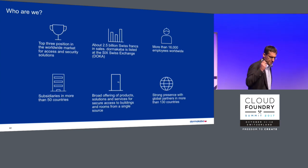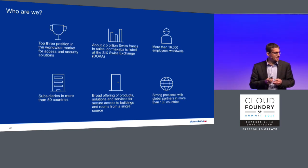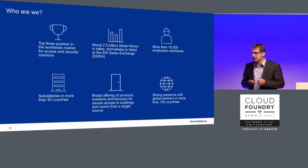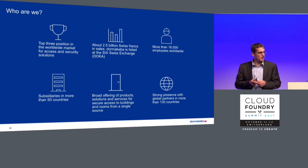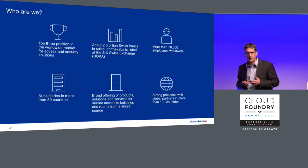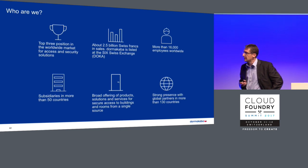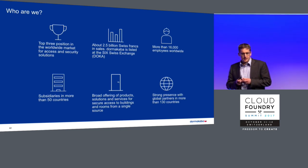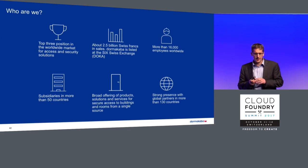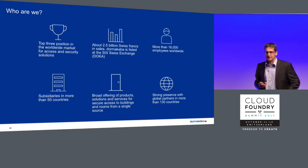Going back 14 years: we were at Dormacaba, one of the players in Europe in access control, well positioned. Now we are number two or three worldwide in access control, depending on where you set the boundaries. We started 14 years ago with some 700 million Swiss francs in revenue. Now, by organic and inorganic growth, we have 2.5-plus billion Swiss francs in revenue, 16,000 people worldwide, subsidiaries in 50-plus countries. We have a very broad offering of products — panic bars, cylinders, locks, closers — but actually it's interesting stuff, as we'll see in a minute.